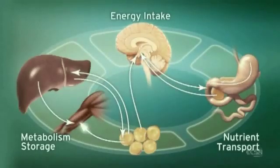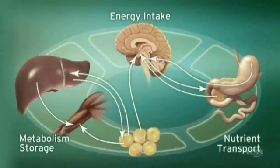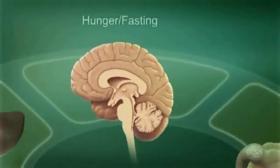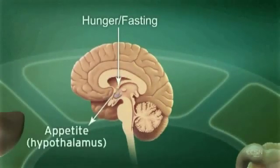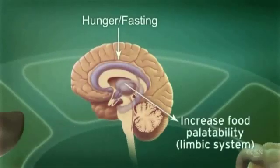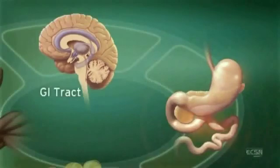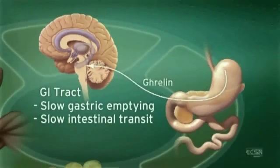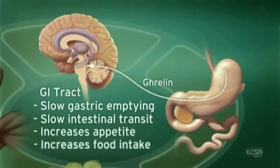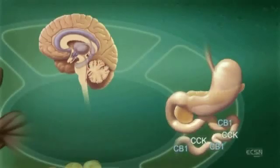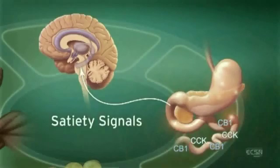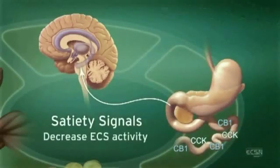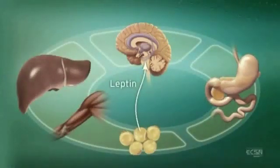Endocannabinoid system activity in the central nervous system regulates food intake. For example, ECS stimulation by hunger and fasting signals stimulates appetite and increases the palatability of food. Endocannabinoids slow gastric emptying and GI transit and appear to stimulate secretion of ghrelin, a neuropeptide that increases appetite and food intake. After eating, cholecystokinin in the duodenum triggers satiety signals. Subsequently, ECS activity is decreased through suppression of CB1 expression. An increase in the adiposity hormone leptin decreases endocannabinoid levels in the hypothalamus and decreases food intake.